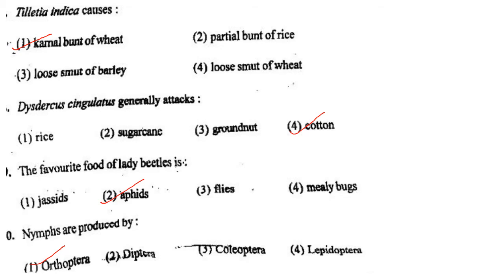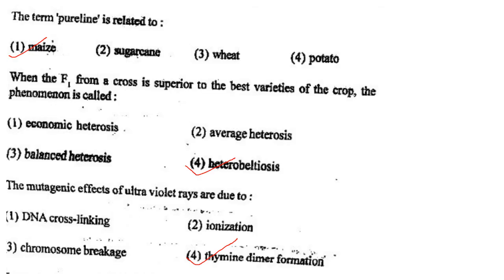Next one: Nymphs are produced by option 1, Orthoptera; option 2, Diptera; option 3, Coleoptera; option 4, Lepidoptera. Answer is option 1: Orthoptera.